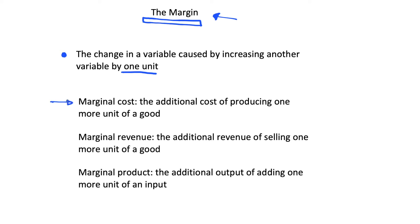One of these is marginal cost, and this is the additional cost of producing one more unit of a good. This unit of a good is our 'other variable', and cost — our original variable — is what we're taking the margin of.